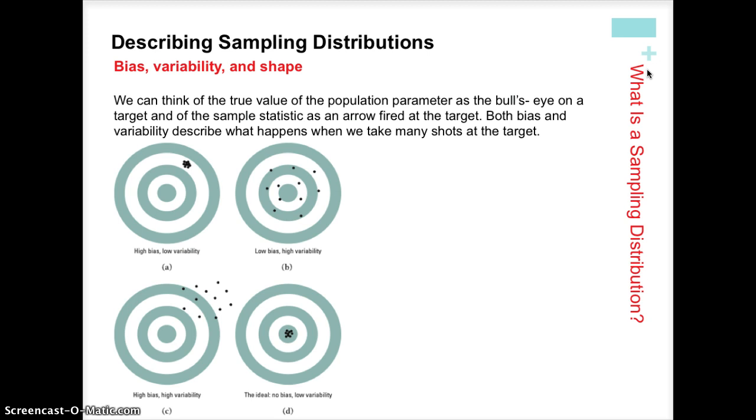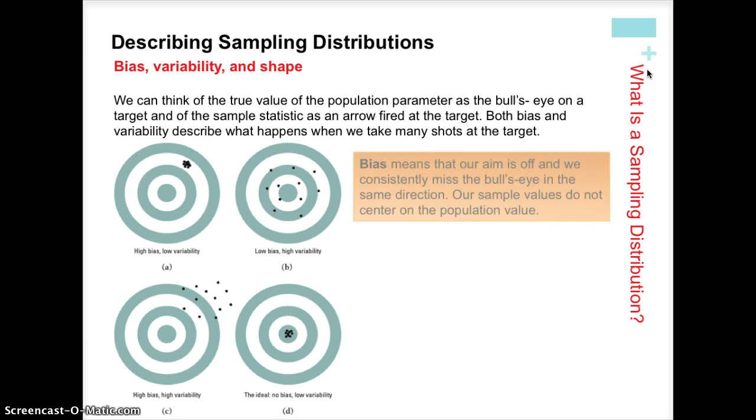The third illustration, C, we have both bad things. We have high bias, so it's far away from the center of the target, and high variability. There's still a cloud of estimate values. And in D, we have exactly the situation that we want, low bias, so all of our sample values, our sample means, are close to the population mean, and they're all close to each other. So we have low variability and no bias. That's the most ideal situation.